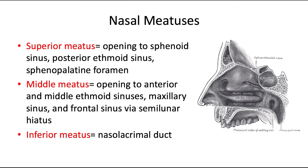The nasal meatuses are distinct air passages of the lateral nasal cavity, located inferior to each nasal concha of the same name. The superior meatus is just underneath the superior concha, the middle meatus is right underneath the middle concha, and so on. The superior meatus houses the openings to the sphenoid sinus, the posterior ethmoid sinus, and the sphenopalatine foramen.